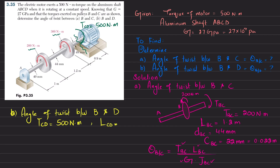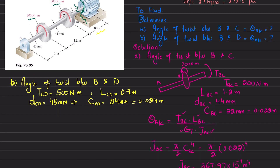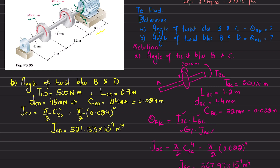The length of CD, L_CD, equals 0.9 meters. The diameter of CD is 48 millimeters, so the radius c_CD equals 48 divided by 2, which is 24 millimeters, or 0.024 meters. The polar moment of inertia J_CD equals π/2 times 0.024 to the power 4, which gives J_CD = 521.153 × 10⁻⁹ m⁴.